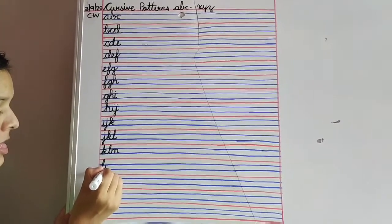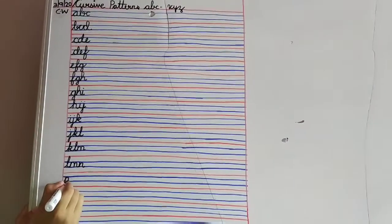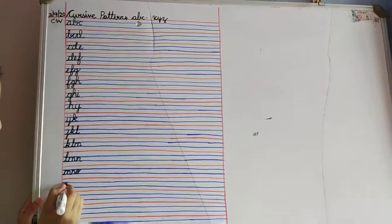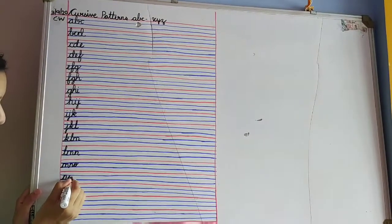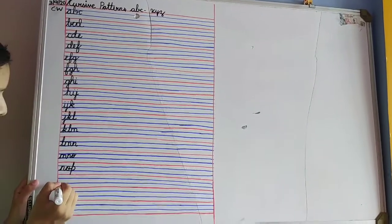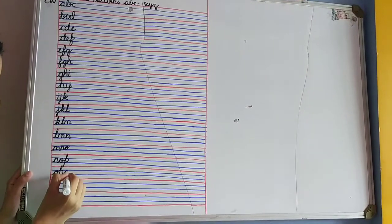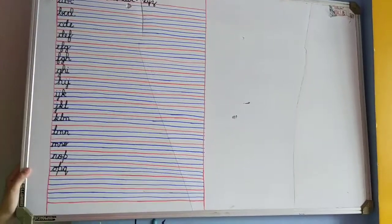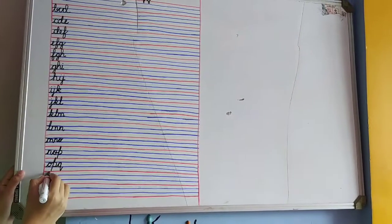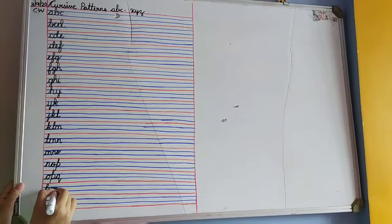Next, L-M-N. M-N-O. N-O-P. O-P-Q. Is it correct? Okay. P-Q-R.